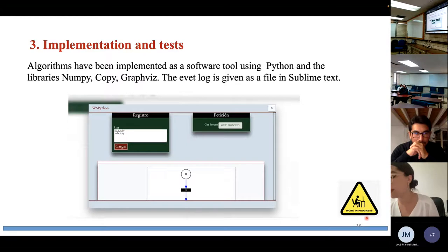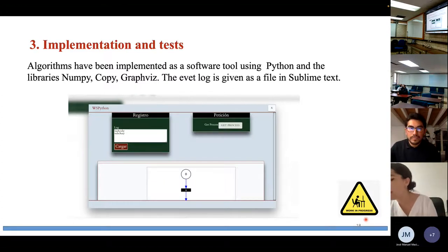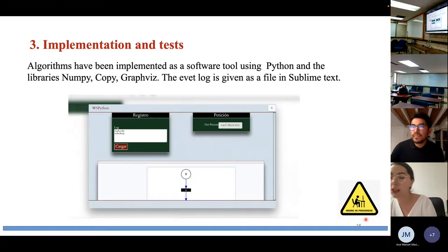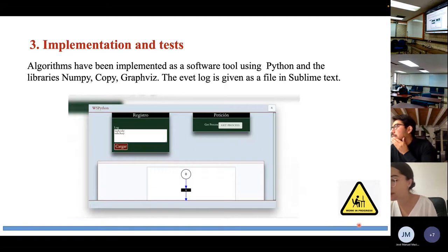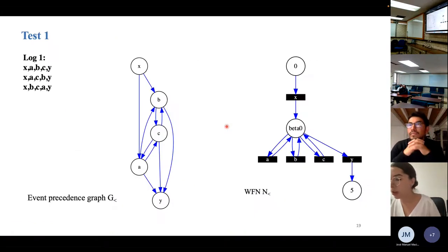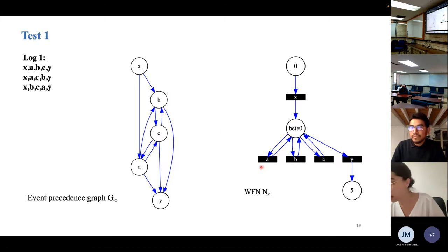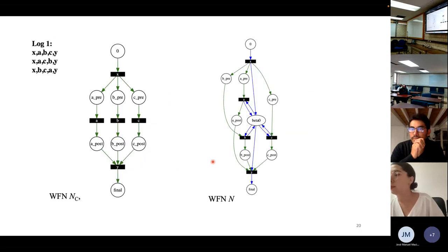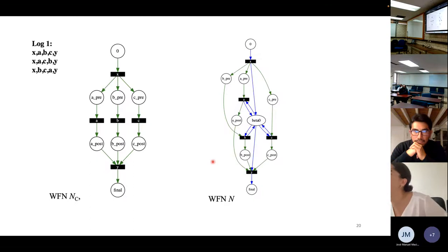The implementation uses Python, integrated with libraries such as NumPy, copy, and graphics for displaying graphs. The interface allows entering event log traces in a simple format, showing the precedent graph and the different nets created by the method. For a log with three traces, the tool displays the event precedent relation graph, the Petri net state machine, the marked graph NC, and the final workflow net.